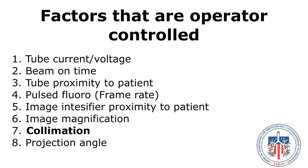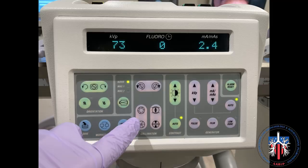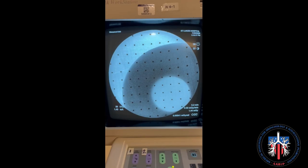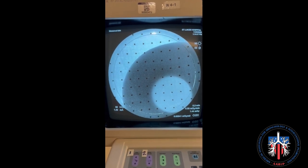Collimation: tight collimation reduces scatter and improves image quality. A 50% reduction in viewed area will reduce scatter and scatter dose by 50%. Press the collimation button shown here. Here is a real-time example of collimation.